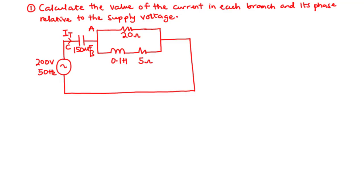How do we approach this question? The first thing we need to do is find the total impedance of this circuit so that we can divide the value of the supply voltage by the total impedance to find the value of the total current produced by this voltage source. Then we can distribute the current in the various branches.